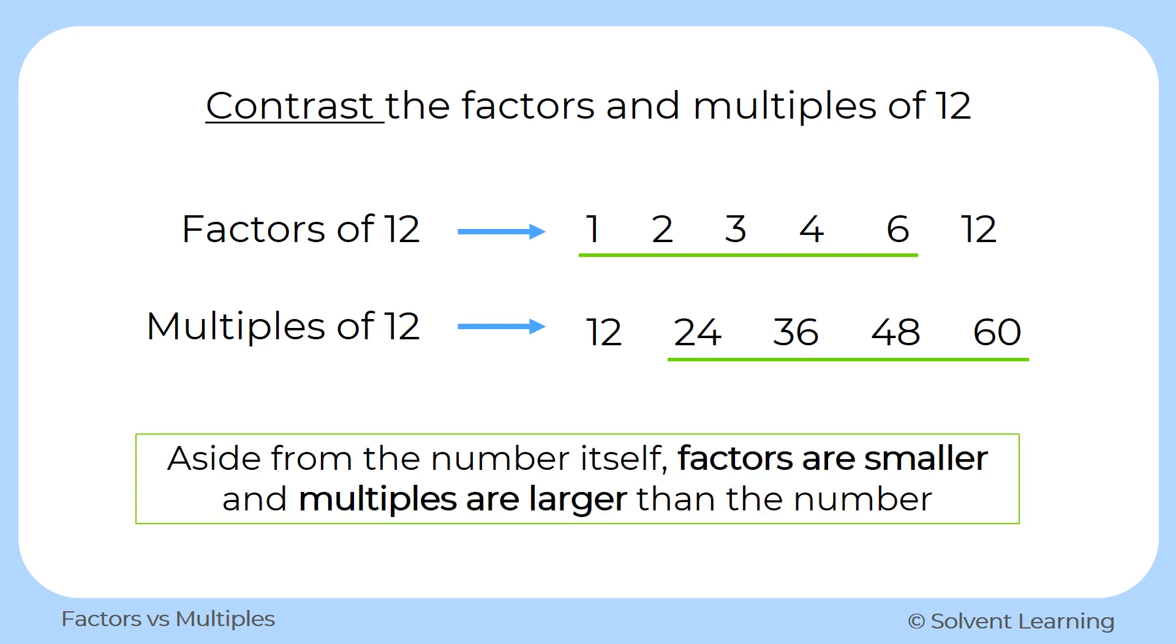So we can say that aside from the number itself, the factors will always be smaller than the number, and multiples will always be larger than the number.